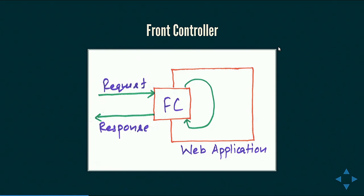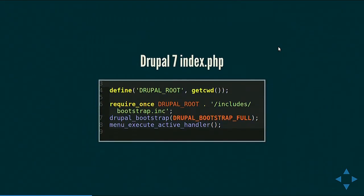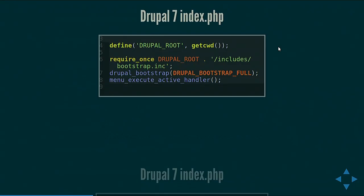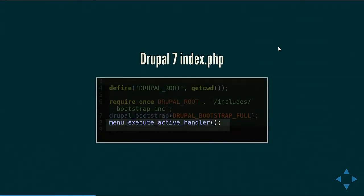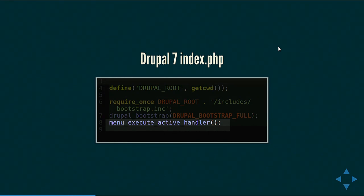Let's see how the front controller works in Drupal 7. This is index.php code for Drupal 7 — we'll be looking at the last line: the function menu_execute_active_handler. It identifies which callback function should be used to process the current request and passes control to that function, which then has the responsibility of handling request and response. So in Drupal 7, index.php does not have full control over the request-response flow as it ideally should with the front controller pattern. This changes with Drupal 8.